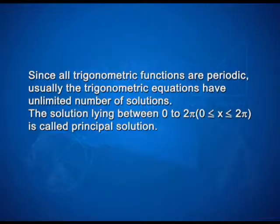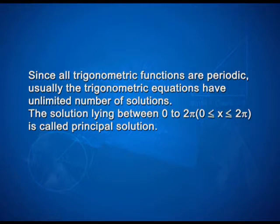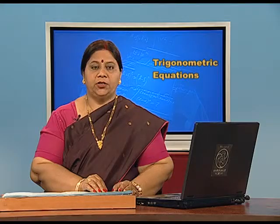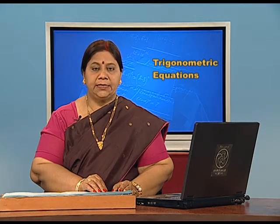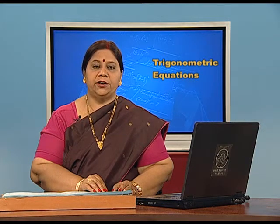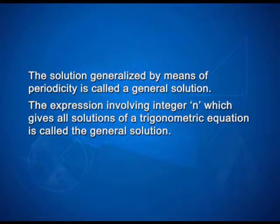Since all trigonometric functions are periodic, trigonometric equations usually have an unlimited number of solutions. The solution lying between 0 and 2π, that is 0 ≤ x ≤ 2π, is called the principal solution. The expression involving integer n which gives all solutions of a trigonometric equation is called the general solution.